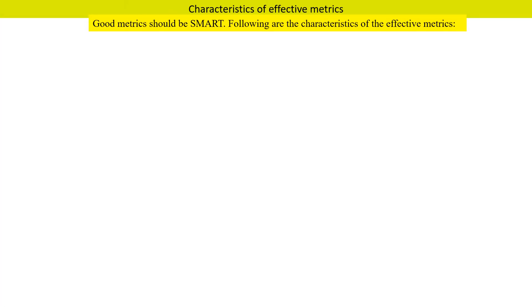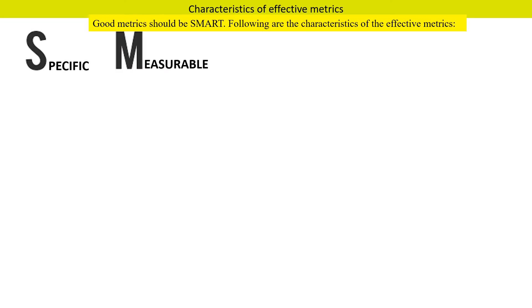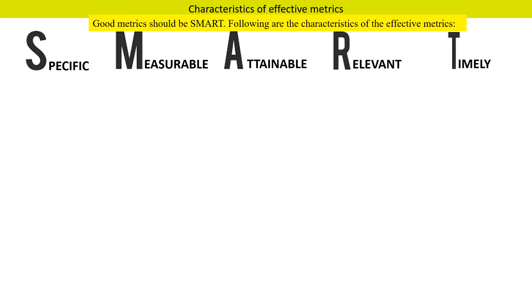Characteristics of effective metrics — good metrics should be SMART. SMART means Specific, Measurable, Attainable, Relevant, and Timely.